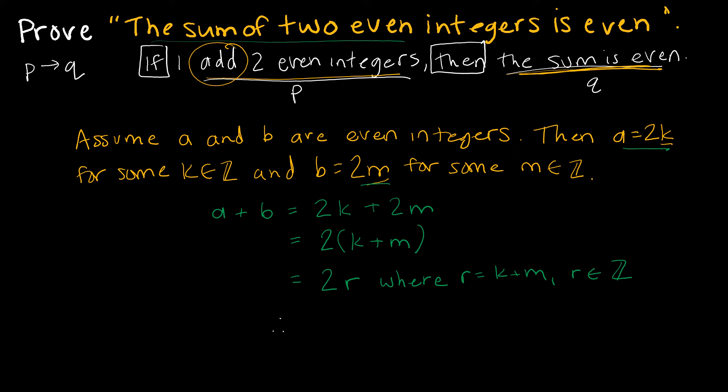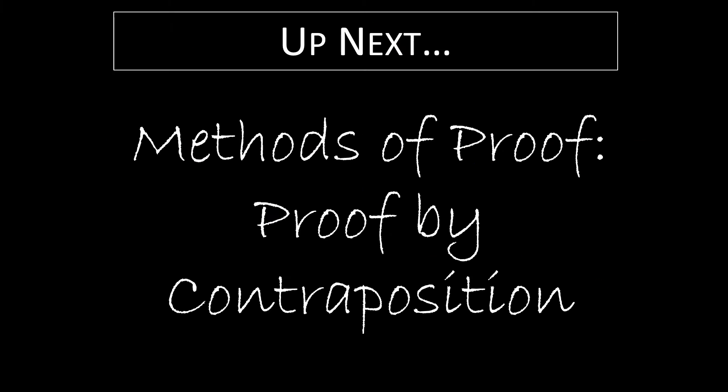So therefore, the sum of two even integers is even. I would encourage you to continue practicing the method of direct proof on your own. But for us, we're going to move on to our next method of proof, which is proof by contraposition.